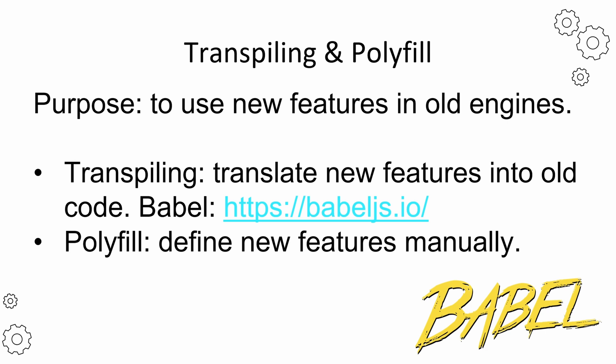Transpiling means to translate new features into old code so that all engines can understand. We can achieve this by using Babel.js. With Babel.js, you can write your code with the latest JavaScript features and don't need to worry about compatibility, as Babel will transpile your code to an older version of JavaScript that works on almost all JavaScript engines out there. Polyfill means if you want to use a new function provided by the latest JavaScript and you want old browsers to run your program smoothly, you can define this function manually in your program. It becomes a function you created instead of one provided by JavaScript. Babel uses this method to transpile JavaScript code as well.